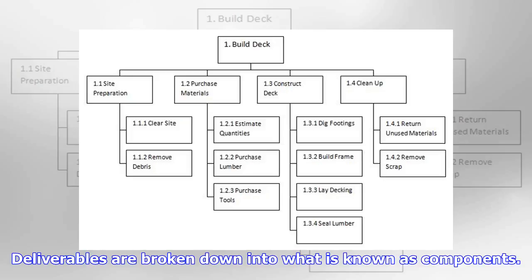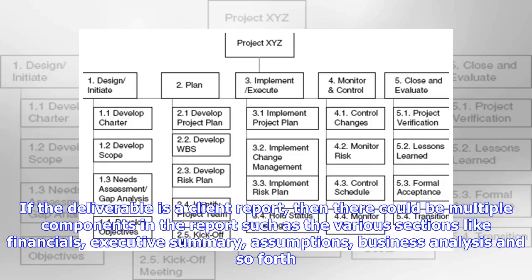Deliverables are broken down into what is known as components. If the deliverable is a client report, then there could be multiple components in the report such as the various sections like financials, executive summary, assumptions, business analysis, and so forth.